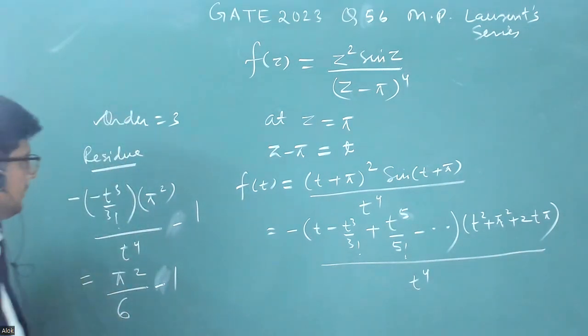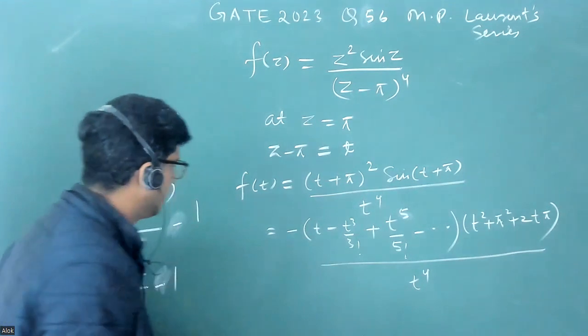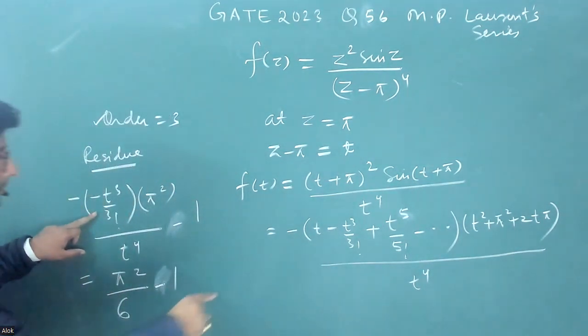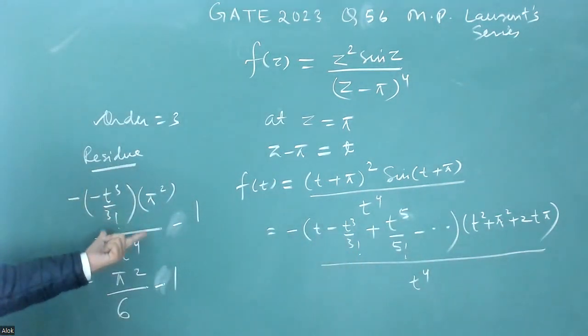For the residue, I want the coefficient of 1 by t. The coefficient of 1 by t will be when t cube is in the numerator. T cube will be in the numerator when this pi square is multiplied. I have written that here.